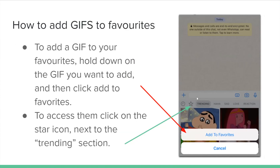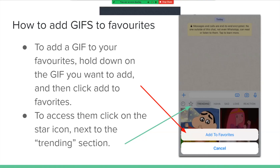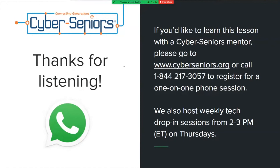To add a GIF to your favorites, hold down on the GIF you want to add, then click 'Add to Favorites.' To access your favorites, click on the star icon next to the Trending section. Thank you for listening — that was all on how to use WhatsApp.